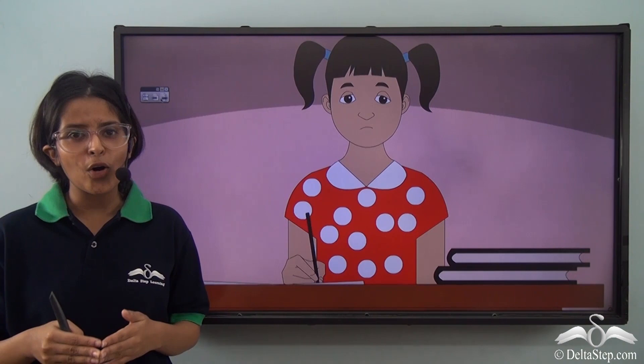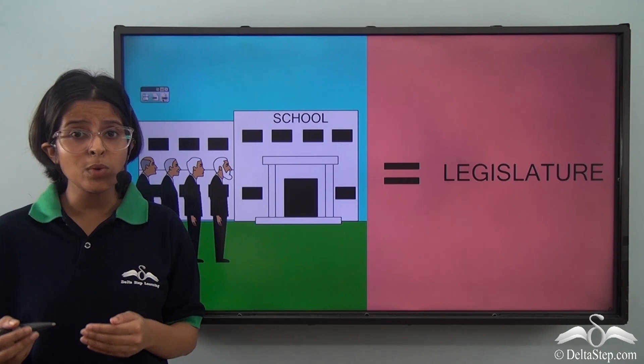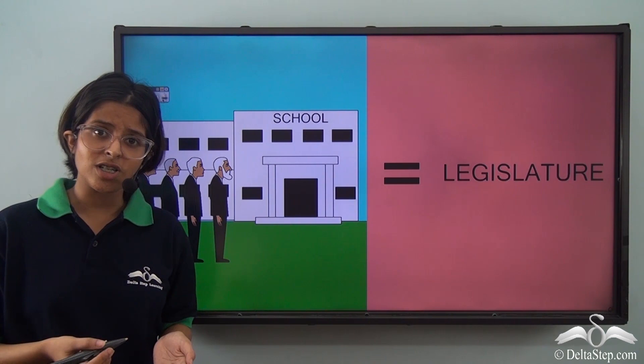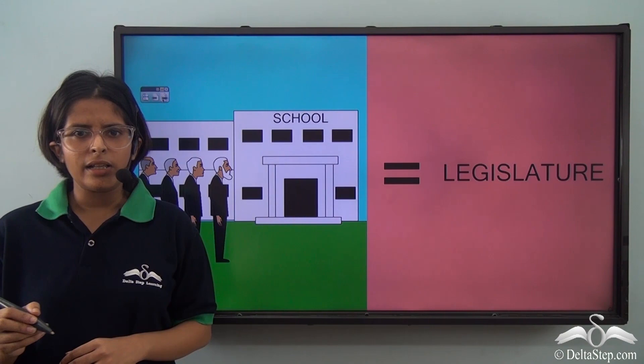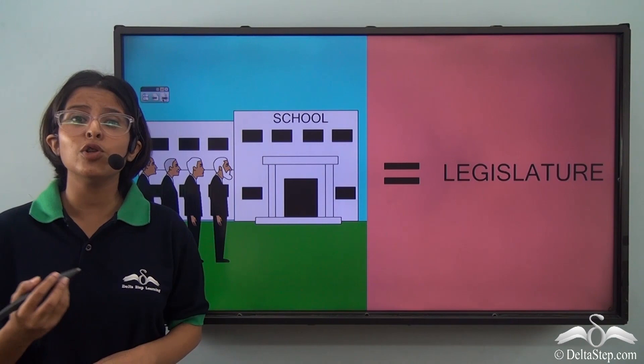Now let us take this story to understand the organs of the government. Every school or every institution has founders, and these founders have made certain rules — certain written rules, certain spoken rules — that are to be followed by the students, by the teachers, and everyone in the institution. Stealing is bad — this is a rule, and this rule has been made by these founders.